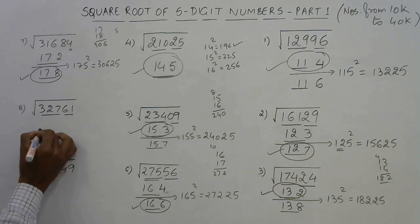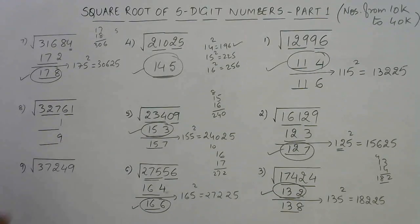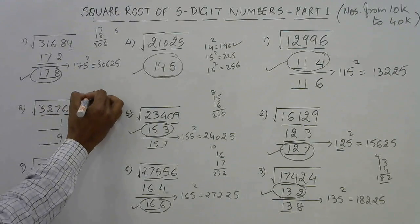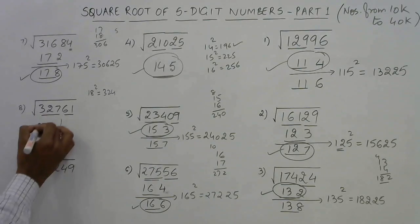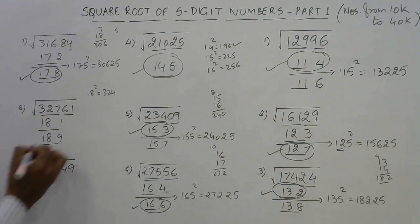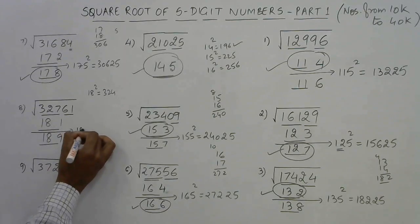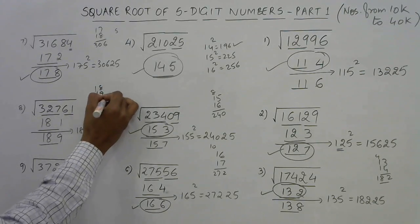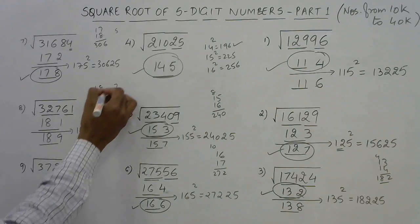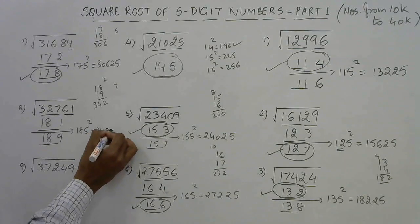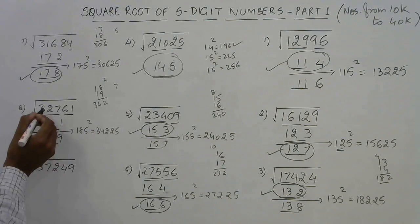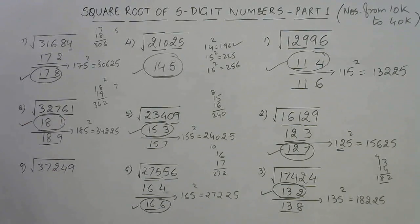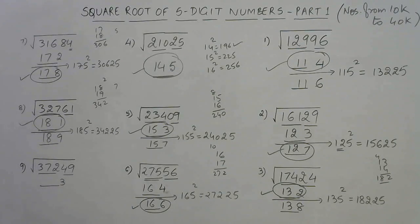Next number ends with 1: the answer ends with 1 (1² = 1) or 9 (9² = 81). The triplet is 327: 18² = 324 is just below 327, so 18 is the remaining part. Options: 181 or 189. Intermediate: 185². Find 18 × 19 = 342, append 25 → 34225. The original number is smaller than 34225, so the answer is the smaller one: 181.